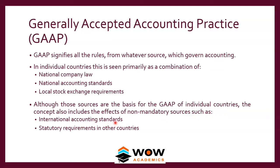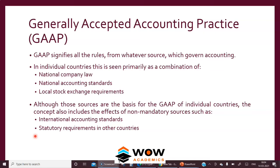Although those sources are the basis for the GAAP of individual countries, the concept also includes the effects of non-mandatory sources such as international accounting standards and statutory requirements in other countries. For example, Infosys is listed in India and also in the US, so they prepare another set of accounts for the US market. Some companies also voluntarily adopt IFRS because it helps them raise finance from international markets — for example, in Europe or London — by issuing debentures. So it's not only local standards that companies follow; they can also follow international standards.